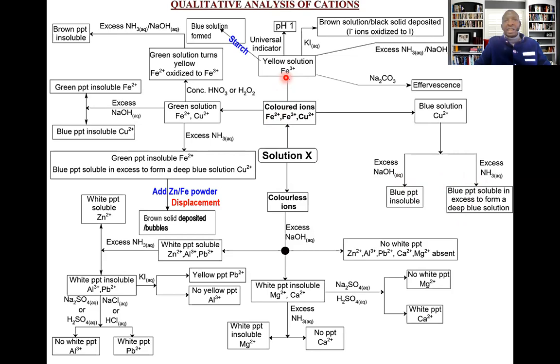We can also have a yellow solution. When you get a yellow solution, this is normally a solution of iron(III) ions. It is important to understand that iron(III) ions are yellow in solution, but the precipitate is brown.